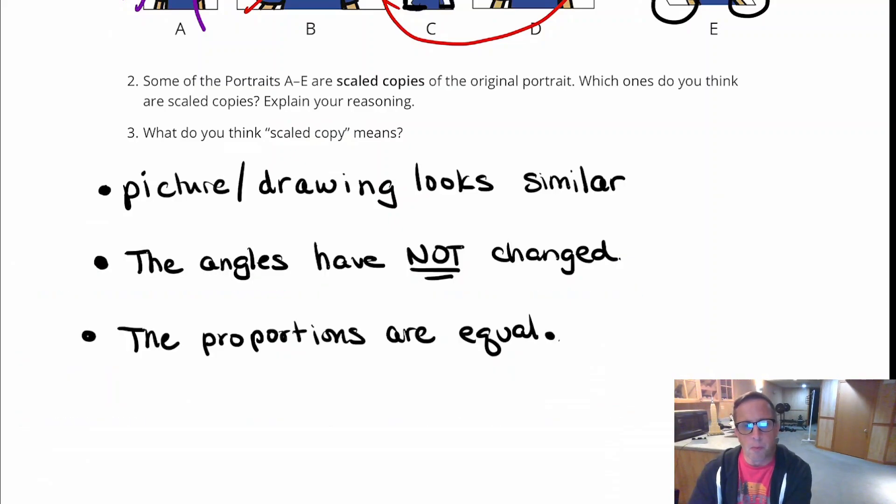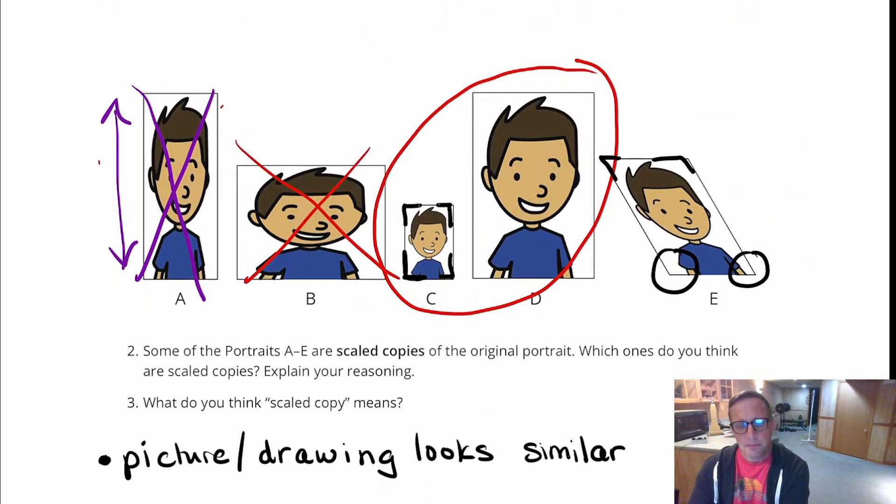And then right here, the proportions are equal. So on C and D, I'm just eyeballing it here, I'm not using any type of measuring, but I would say the width of the picture is about half the height of that picture. I mean, I'd have to really measure it to figure it out, and right now we're not totally concerned with being exactly perfect. We're just using our general math instincts here for telling whether something is a scale drawing or not.